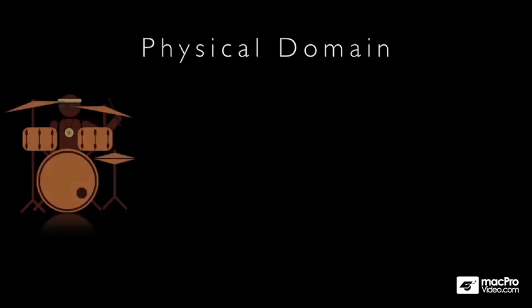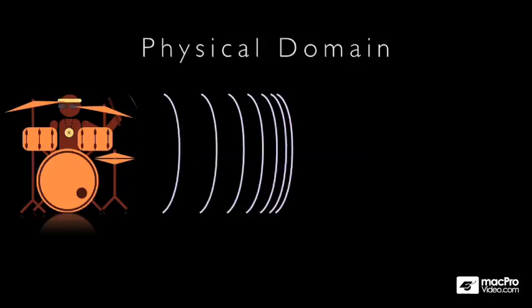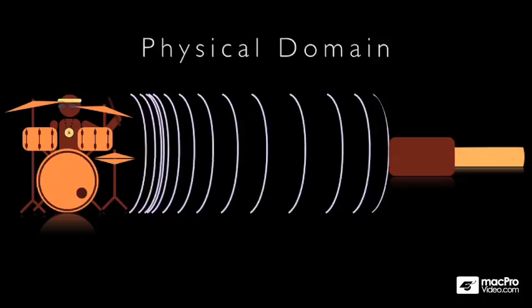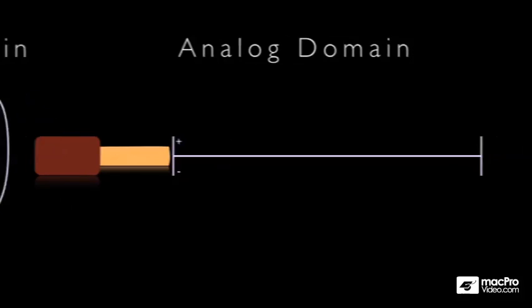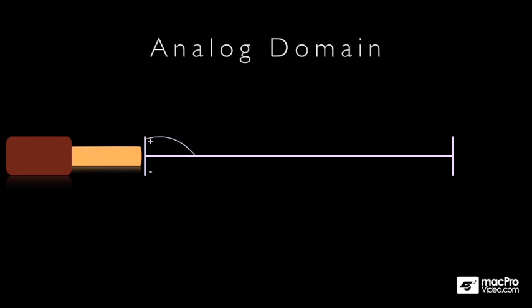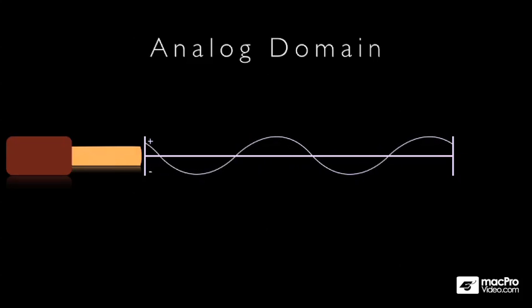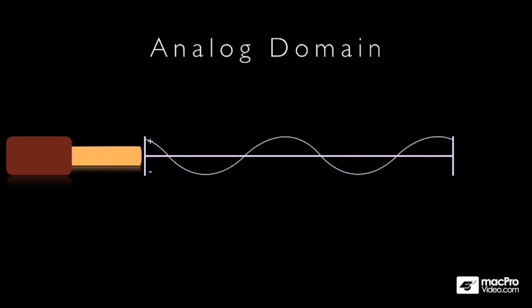In the physical domain, our audio exists as sound, and sound is conveyed through fluctuations in air pressure. And once this sound is captured by a microphone, it enters the analogue domain, where it exists as a continually fluctuating analogue signal — normally conveyed as either a fluctuating electrical voltage or a fluctuating electrical current.